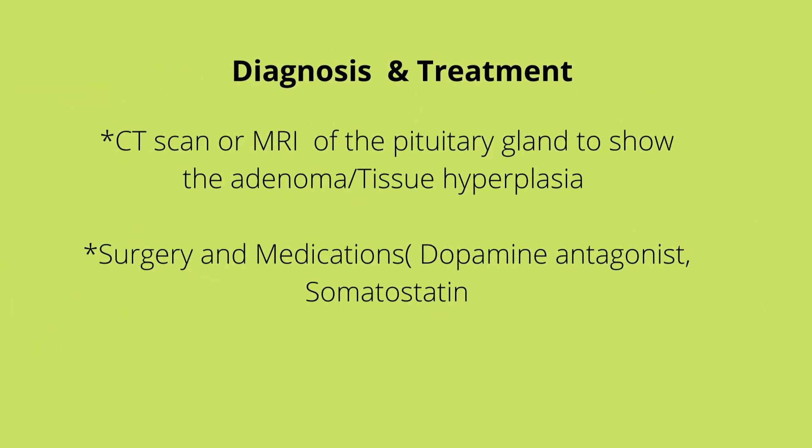For diagnosis, we can do a CT or MRI scan of the pituitary gland, which will show the adenoma or tissue hyperplasia. With treatment, surgery is normally performed where we could remove the tumor — either a partial or a complete removal of the pituitary gland. Medications that could be administered include dopamine antagonists, which inhibit growth hormone or prolactin secretion, and somatostatin for acromegaly.